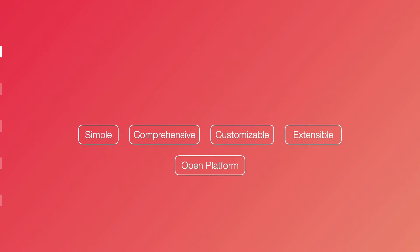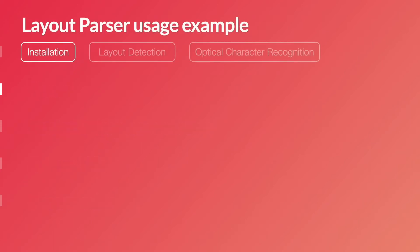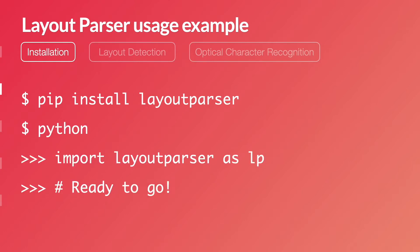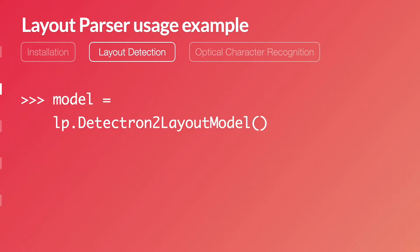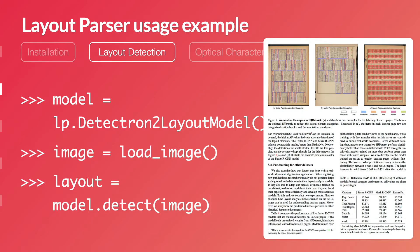As such, we designed Layout Parser. Before talking about the details of design and implementation, let's start with a demo of key features. Layout Parser is extremely easy to install and use — in your command line, just type the following commands and it will be installed and ready to go. Layout detection is a common DIA task, and Layout Parser comes with a rich repository of different models. Just pick the most suitable model and load the target image, and it can accurately detect document layouts with a single line of code.